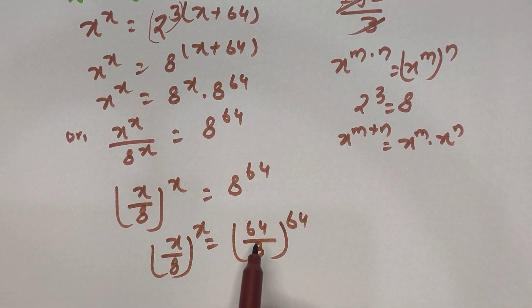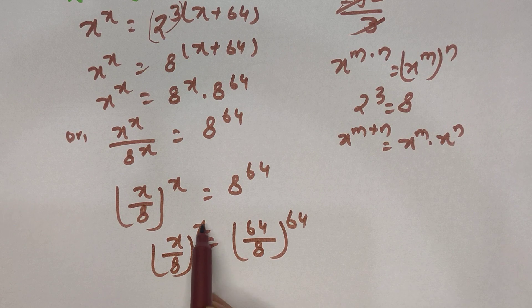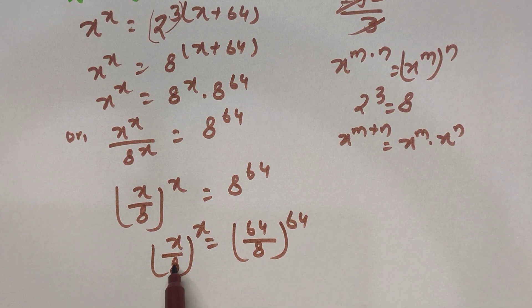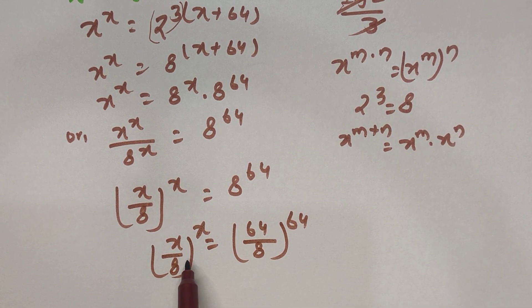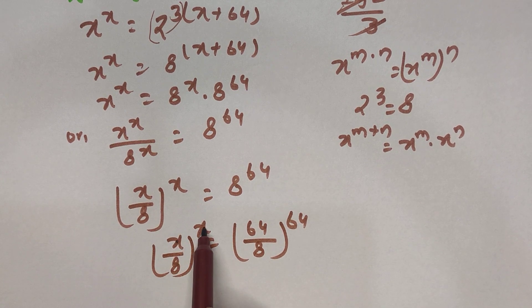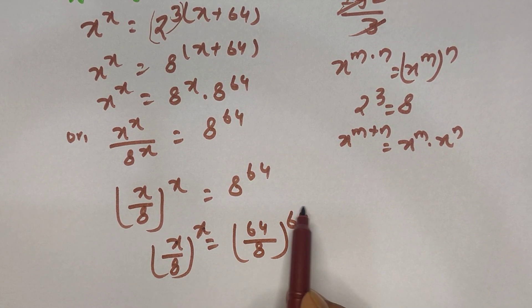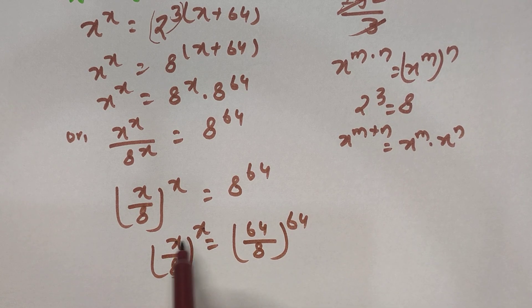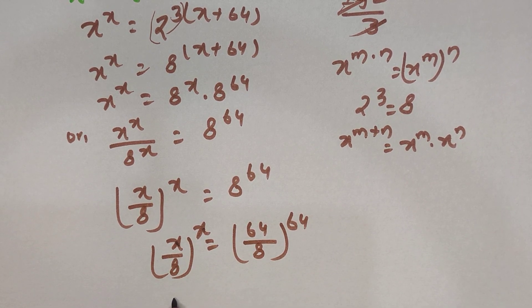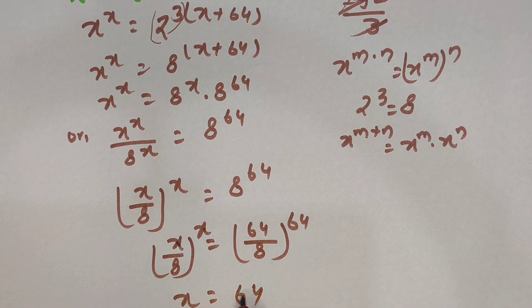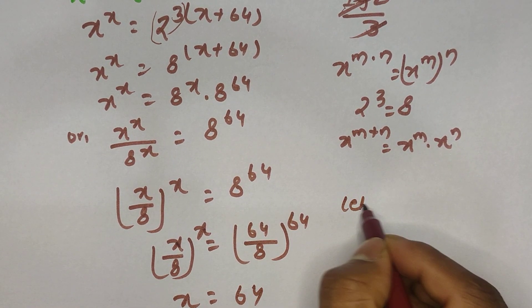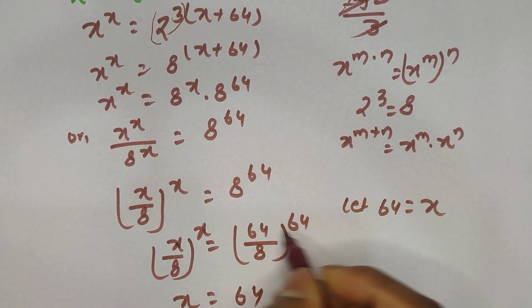From here we can see that here is x, here is also x, and in the denominator we have 8 on both sides. So we can conclude that if this is x, this is also x. In the right side also there is 64, which equals 64. This means the value of x equals 64.